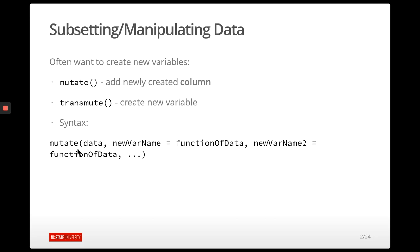The syntax is very similar to all the other tidyverse function syntax. We do the function name, the tibble or data frame we want to work on, and then to create our new variables, we give the new variable name equal to whatever function of the data we want to do. We can create more than one variable at once — we just separate the new variables by commas.